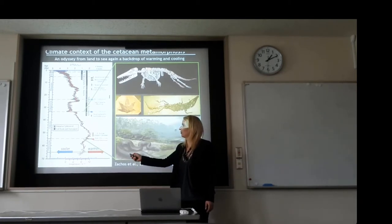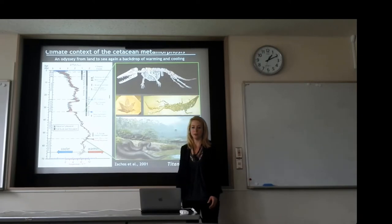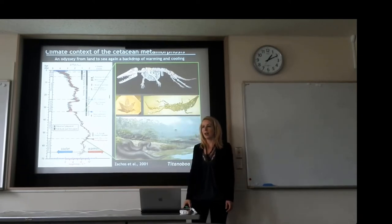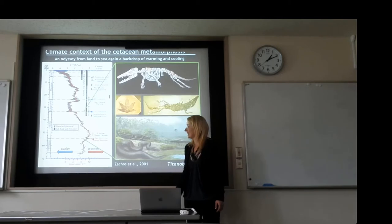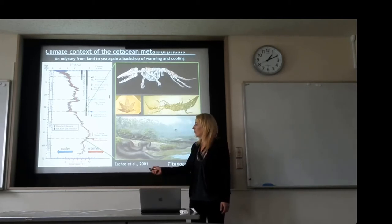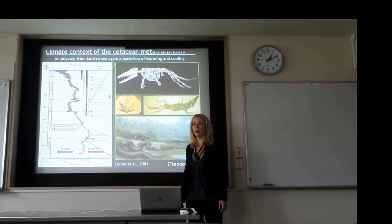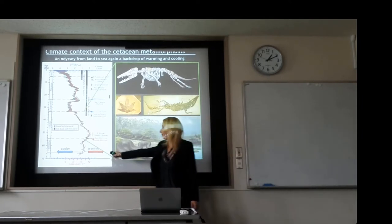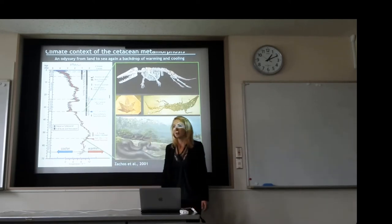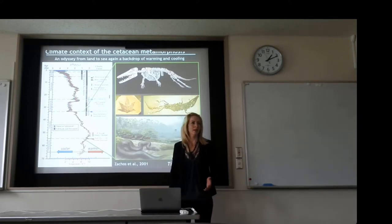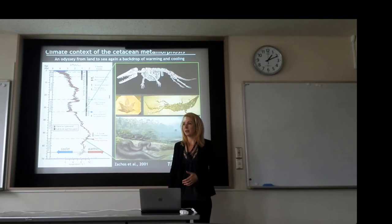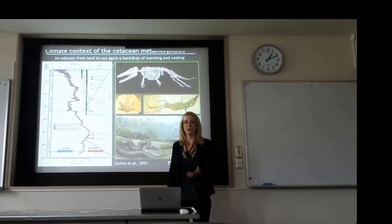This is where our story begins — the story of whales going back into the ocean, which happens during the Eocene. The Eocene is interesting because we see this large rise in temperature that culminates in what's known as the Eocene climatic optimum. It starts with the Paleocene-Eocene thermal maximum — a hyperthermal that characterizes the warmest event since the dinosaurs disappeared.